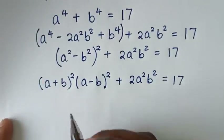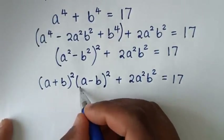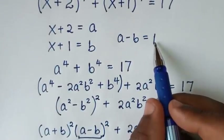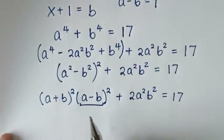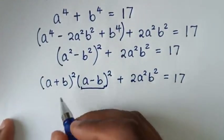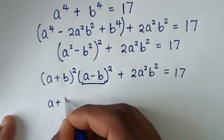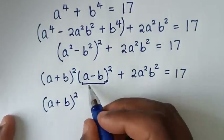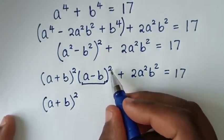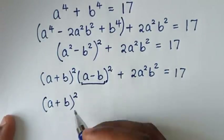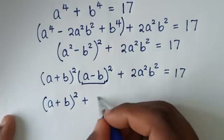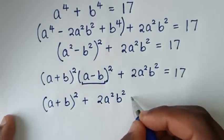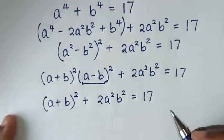Then in the next step, the part a minus b equals 1, so we substitute 1 here. It will be (a+b)² times 1², and since 1 squared is 1, it becomes (a+b)², then plus 2a²b² equals 17.